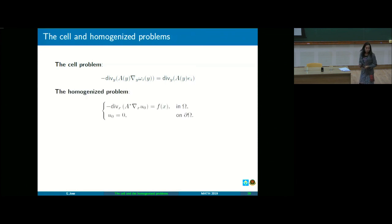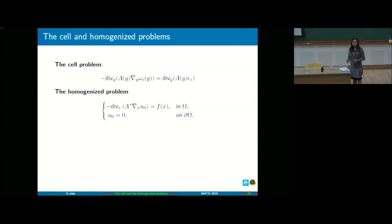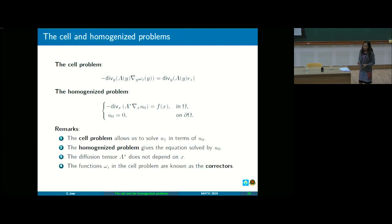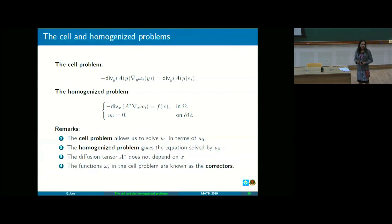On the other hand, the homogenized problem is the problem with a differential equation which involves U0, and as you can see, it only involves X. And A asterisk only depends on Y. So I have the following remarks: the cell problem allows us to solve U1 in terms of U0. The homogenized problem gives the equation solved by U0. The diffusion tensor A asterisk does not depend on X — it only depends on Y. The functions omega-i in the cell problem are what is known as the correctors.